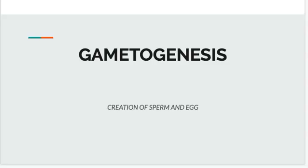Hi everyone. Today we're going to be learning about a process that happens in human beings and is super necessary for sexual reproduction, which is called gametogenesis — the creation of sperm and egg. Think about that word: gametogenesis. Think about what 'gameto' stands for and what 'genesis' stands for. We have seen genesis before because of processes like lipogenesis.